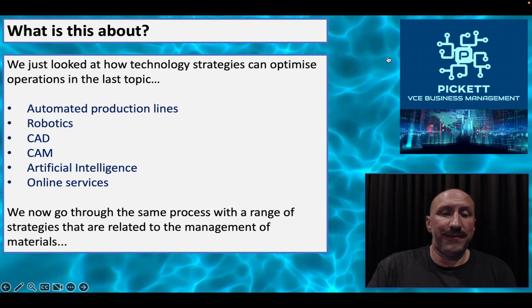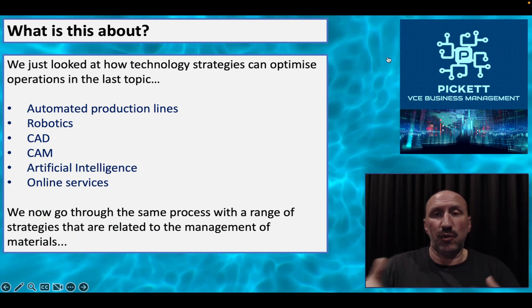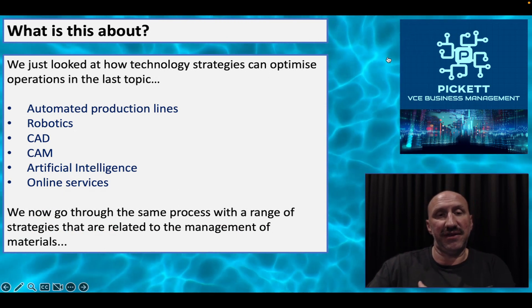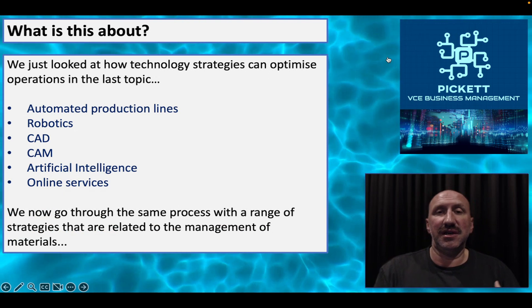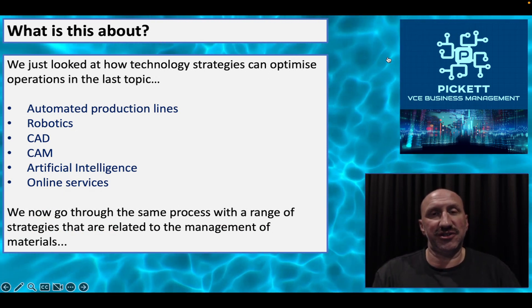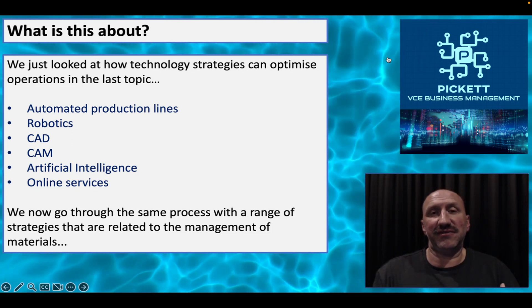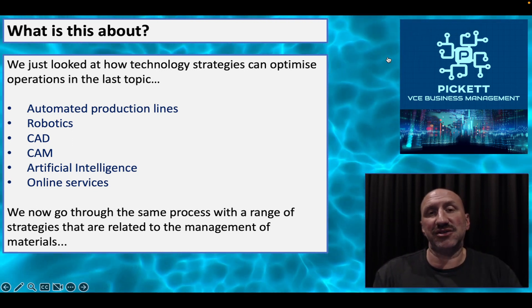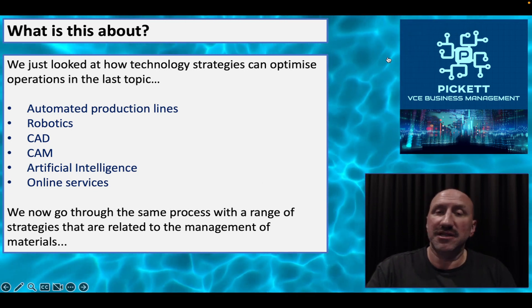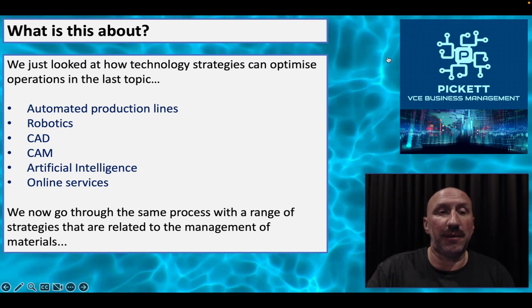We're going to go through basically the same process with these four strategies that we did with those six in the previous video. You need to explain the strategy, provide some advantages and disadvantages, and talk about that strategy in the context of its impact on the efficiency and effectiveness of the business. Then we'll do this another two times with the other areas of strategies.